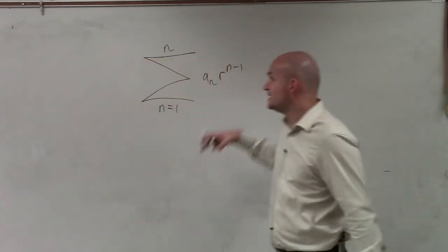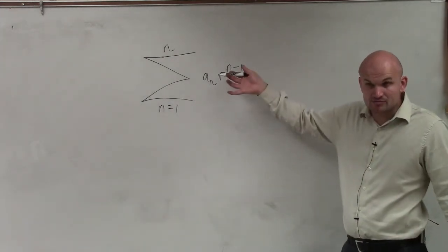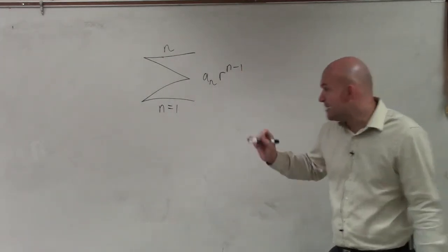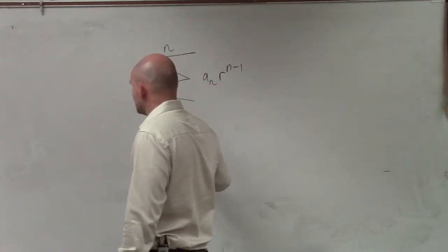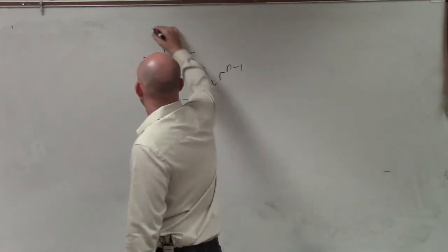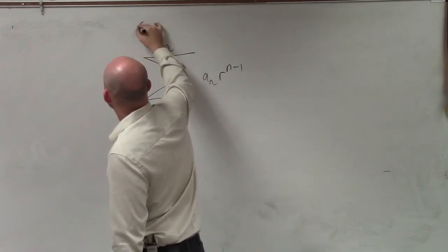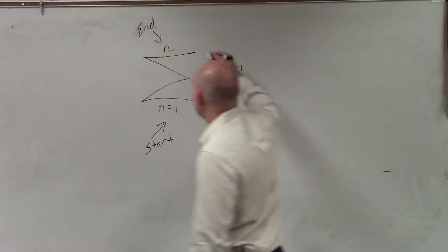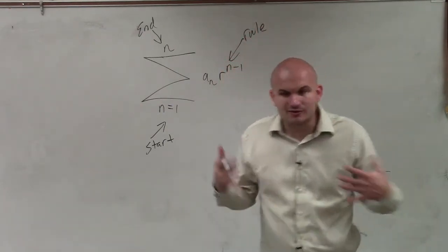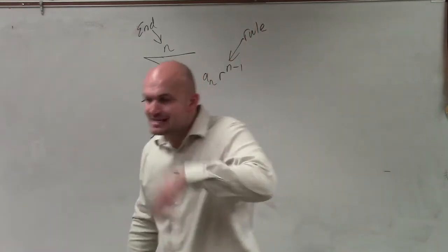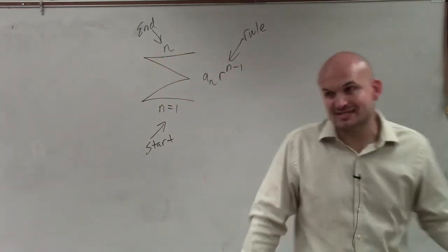What we previously did is we did something like this, but we had an arithmetic sequence. So please remember, the parts of this: this is the value that you start at, this is the value that you end at — so we have a start, an end, and then this is our rule. Last class period, we talked about rules that were arithmetic sequences.